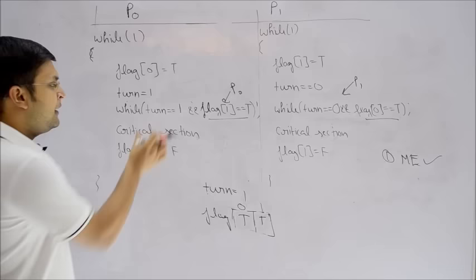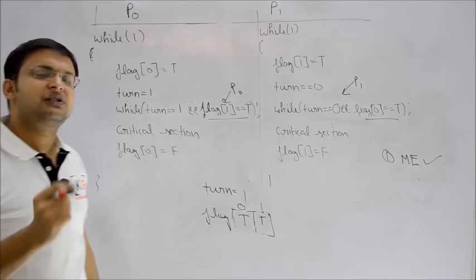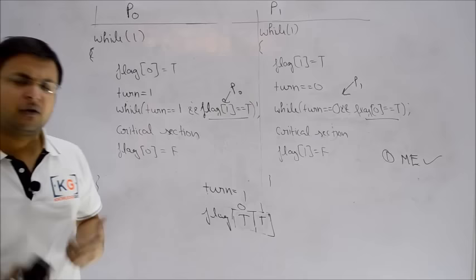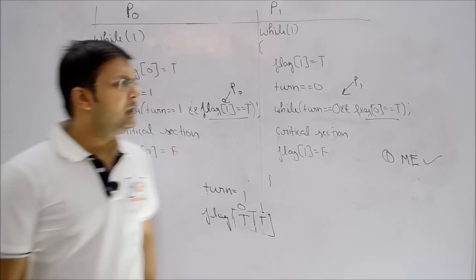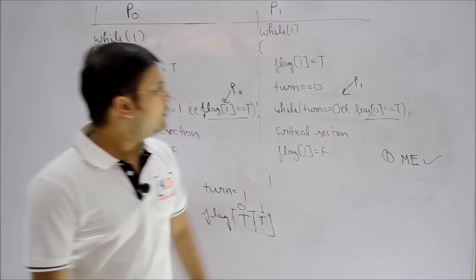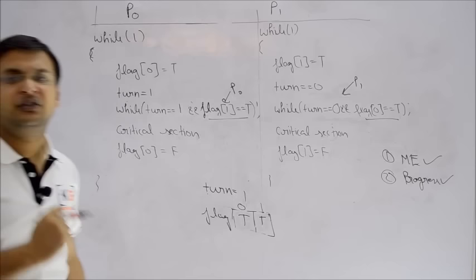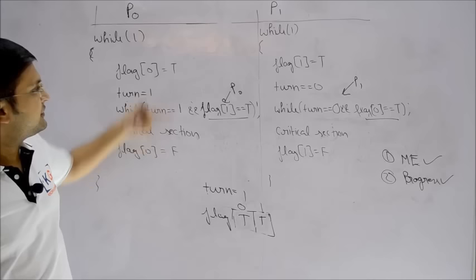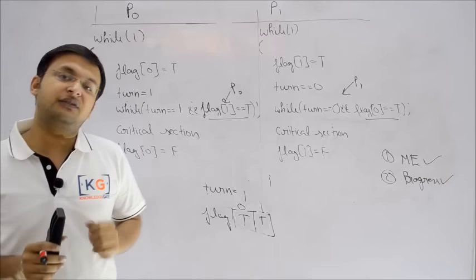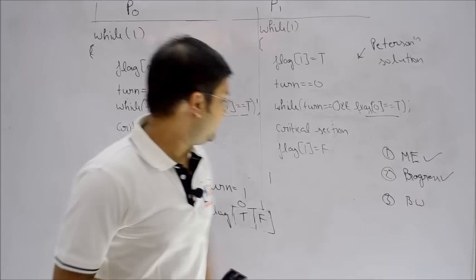The beauty of this algorithm is that even when both processes are interested simultaneously, turn is a single variable that can only be either 0 or 1 at any instant. If turn is 1, the condition for P1's while loop becomes false — so P1 enters the critical section. If turn is 0, then P0's condition becomes false — so P0 enters. Both turn conditions can never be true at the same time. Finally, in this third attempt, we ensure progress — even with both processes interested, the system never deadlocks.